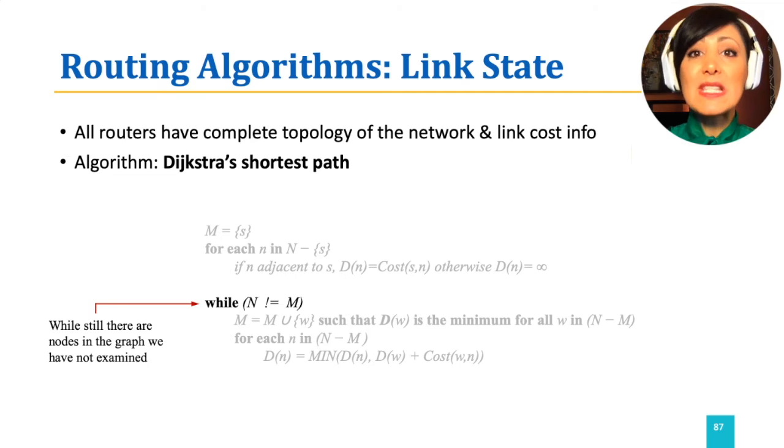Next, we start at the main loop of the algorithm. N is the set of all nodes in the network, and M is the set of examined nodes. This loop will continue until all nodes in the network are examined.